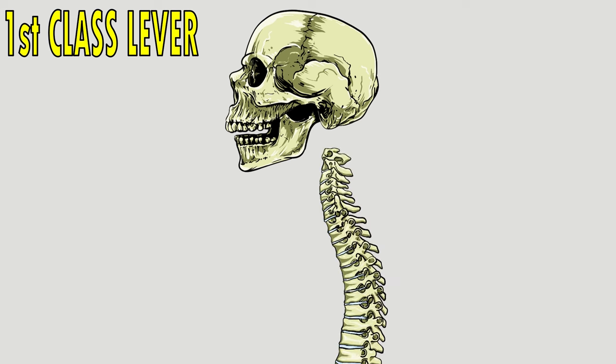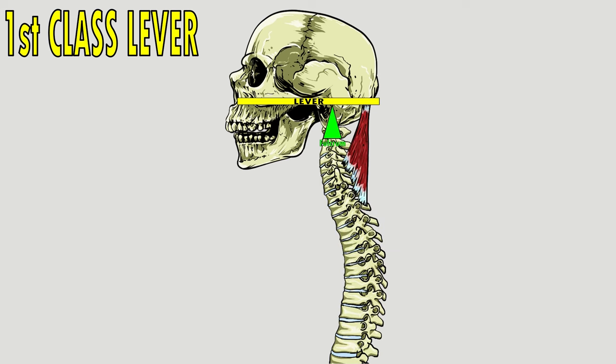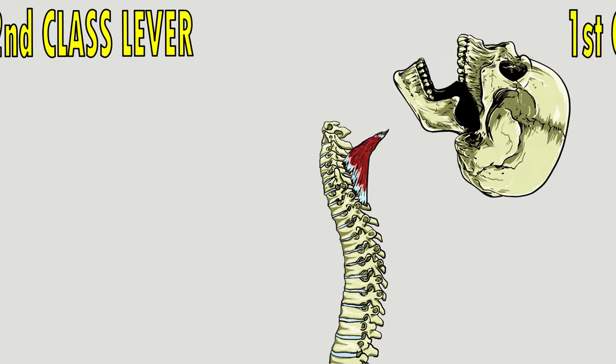Now for examples of levers in the human body. The first class lever is the human head sitting on the spine: the fulcrum is the atlas vertebra in the middle of the spine, the neck muscles are the effort force, and the weight of the head is the resistance. Its function is to change directions — when the muscle contracts, it creates force causing a change of direction.